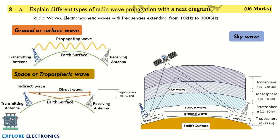The next question asks you to explain different types of radio wave propagation with a neat diagram. Radio wave propagation occurs in three ways depending on the nature of communication required: ground or surface wave, space or tropospheric wave, and sky wave. The diagram should clearly indicate which type of wave is used for which kind of communication.